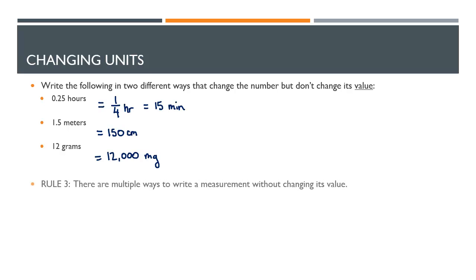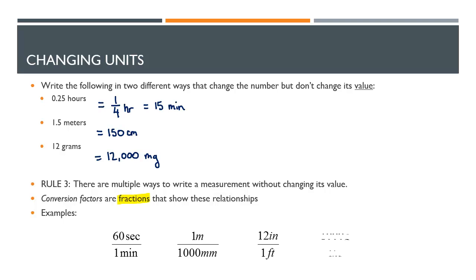That brings us to rule number 3: there are multiple ways to write a measurement without changing its value. And a conversion factor is a fraction that shows the relationship. So it shows this equality. And an example of a conversion factor would be 60 seconds over 1 minute, 1 meter over 1,000 millimeters, 12 inches over 1 foot, and 1,000 grams over 1 kilogram.